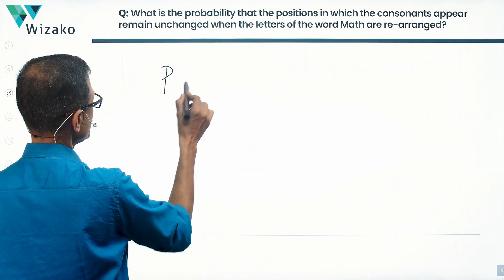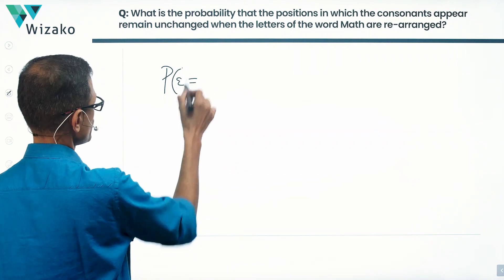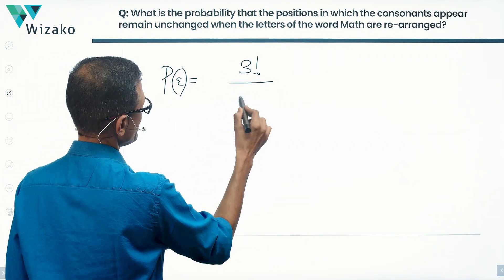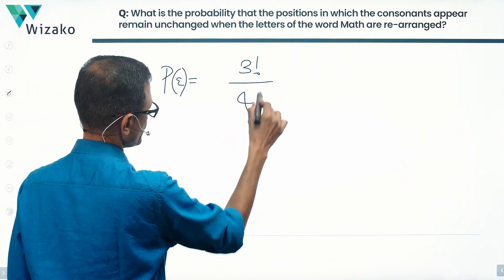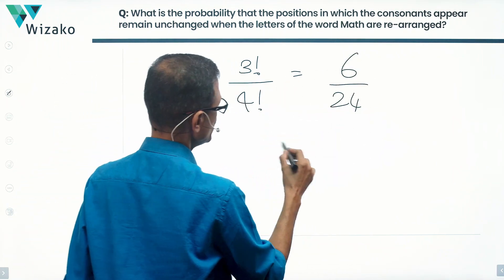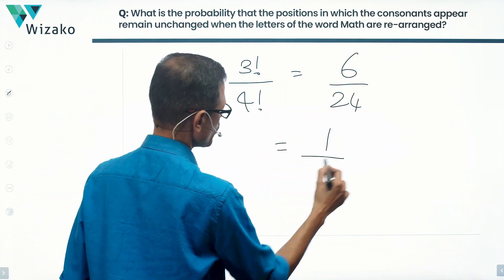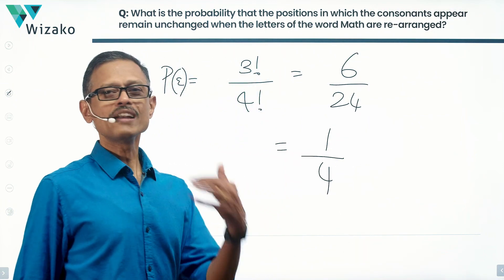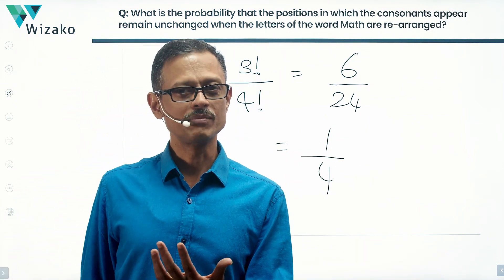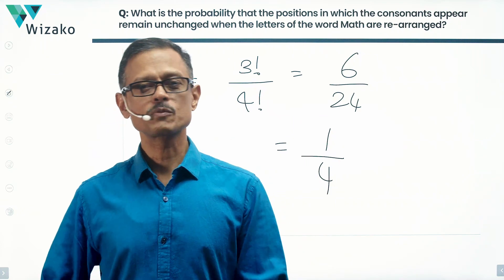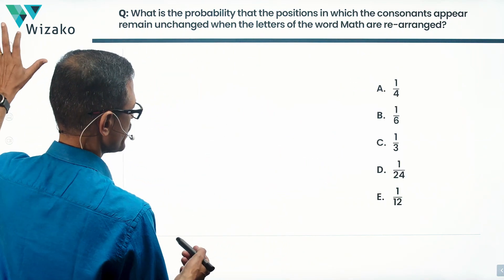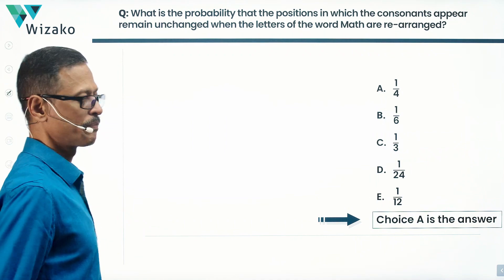So the required probability is equal to three factorial divided by four factorial, which is six divided by twenty-four, giving us one-fourth. In one-fourth of the cases where you rearrange the letters of the word MATH, you will find that the consonants' positions remain unchanged. One-fourth — choice A — is the correct answer to this question.